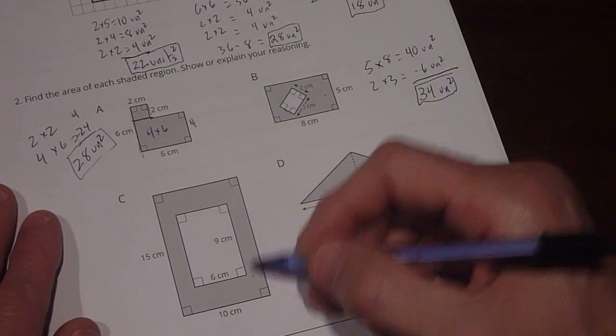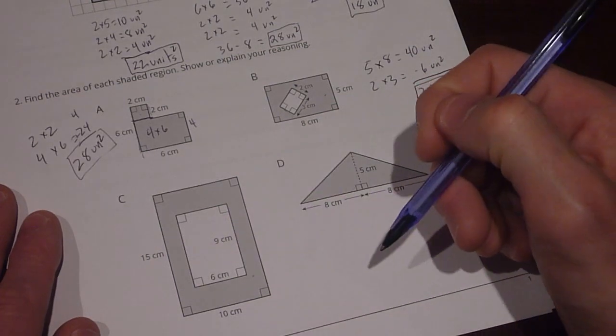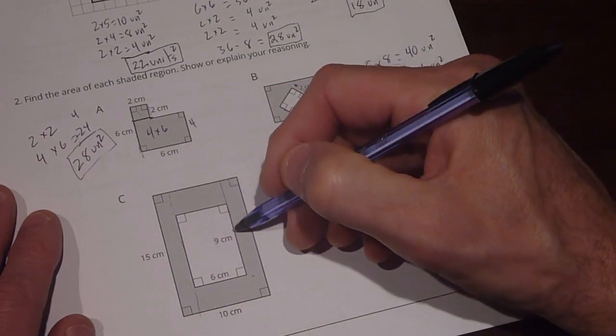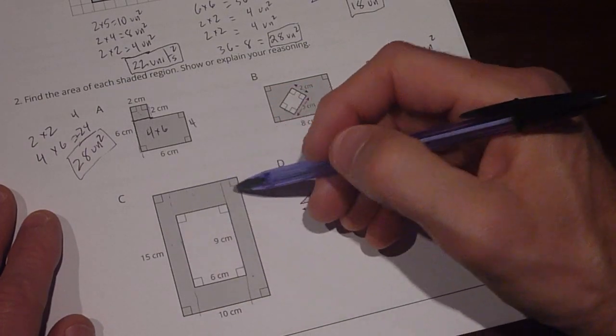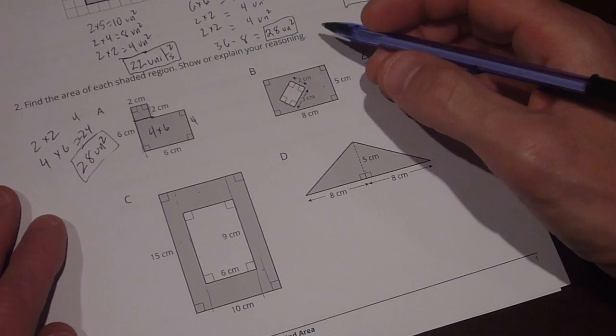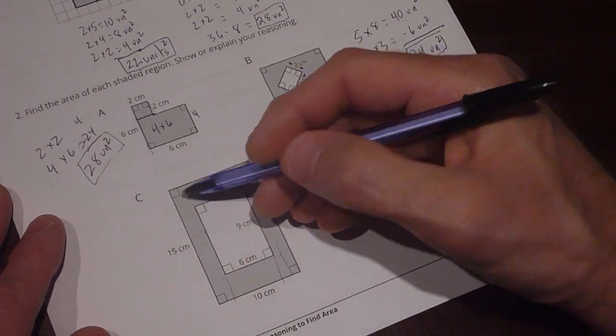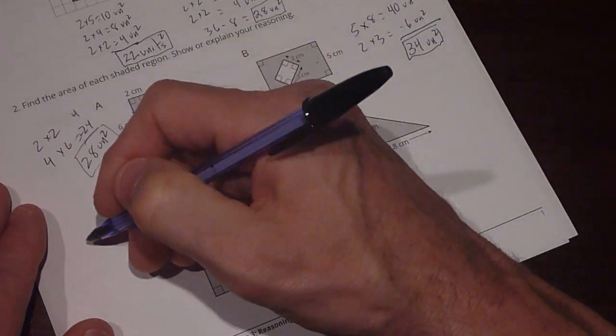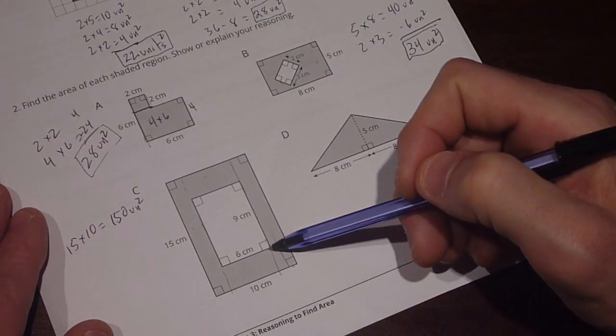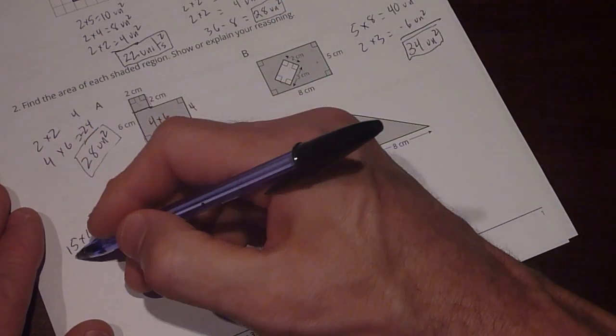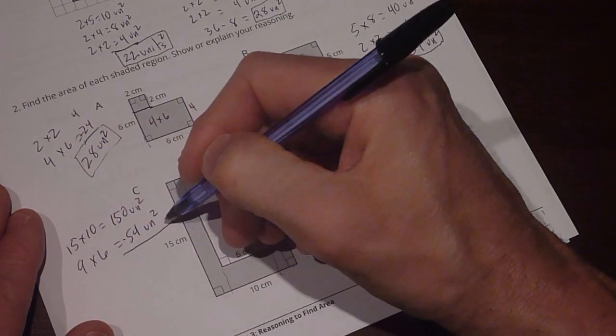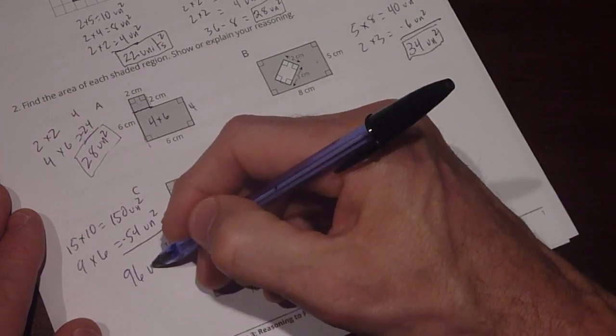Figure C is the same thing. It's a big outer square and I subtract a big inner square. That's one way I could do it. Another way I could do it is I could split it up into rectangles like this. And I would have 1, 2, 3, 4 rectangles if I wanted to. I'm going to do it the subtraction way. So my big rectangle is 15 by 10. So 15 times 10 equals 150 units squared. And then my inner one is 9 by 6. That's 9 times 6, which equals 54 units squared. I'm going to subtract those and I'm left with 96 units squared.